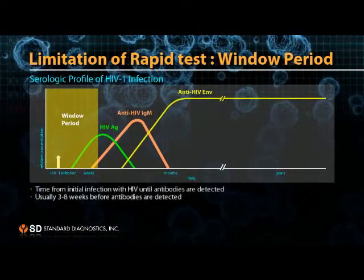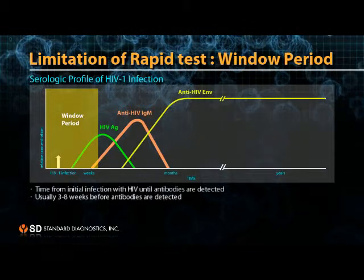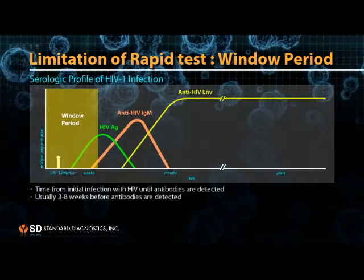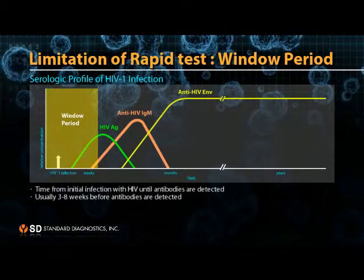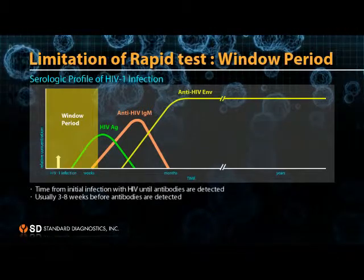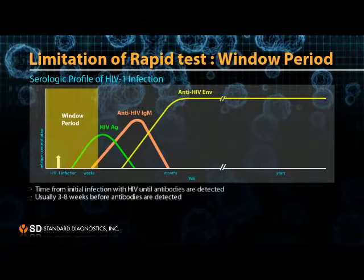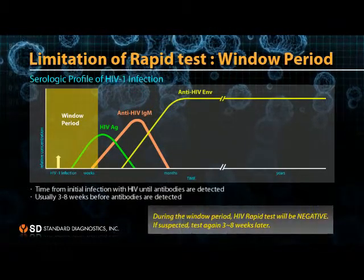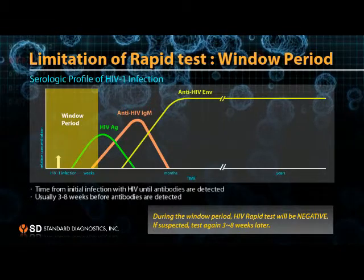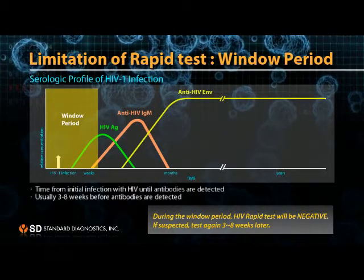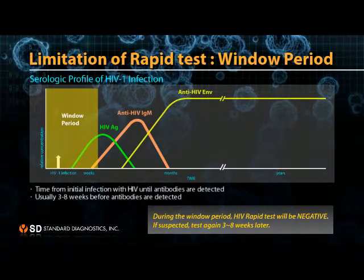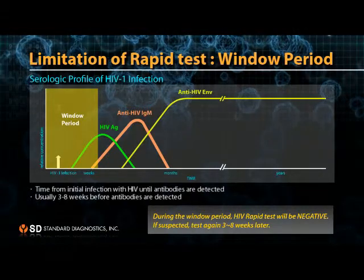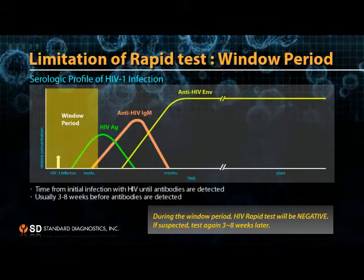This useful rapid test has one limitation: the window period. The window period is the phase when you have been infected with HIV but antibody levels are not yet detectable. During the window period, the HIV rapid test will be negative. If infection is suspected, test again three to eight weeks later.